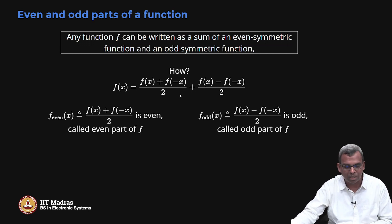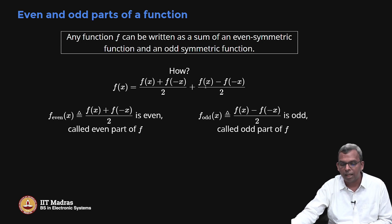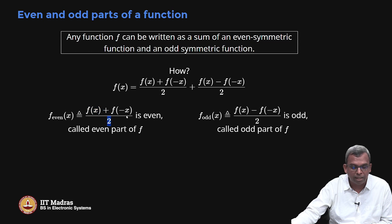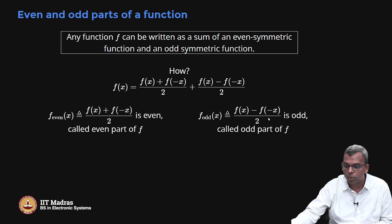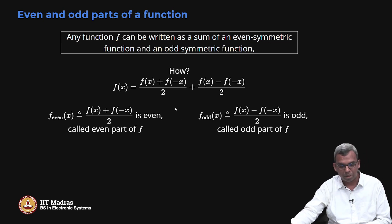Interestingly, what happens when you do this: this part becomes even — f_even(x) = [f(x) + f(−x)]/2 is even, and this is called the even part of x. Likewise, the other part becomes odd — it is an odd symmetric function. You can see it very easily: in this function, if I put x equals minus x, I get the same thing again. In the other function, if I put x equals minus x, I get minus of that function.